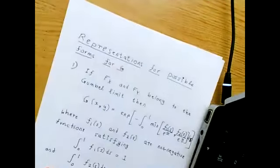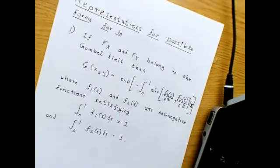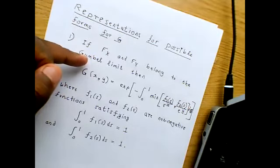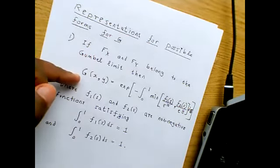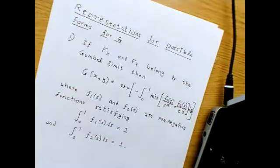One of the things I talked about on Tuesday is the following. The possible bivariate extreme value distributions have certain representations — I gave you four different representations. One of them is that if the marginals belong to the Gumbel domain, then the possible forms for G, the bivariate extreme value distribution, can be expressed in a form where f1 and f2 are non-negative functions and they integrate to one.